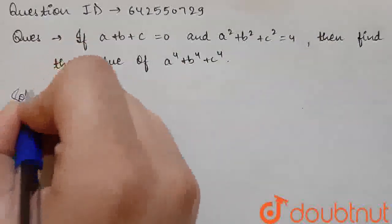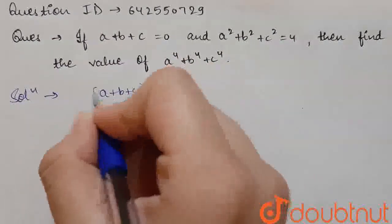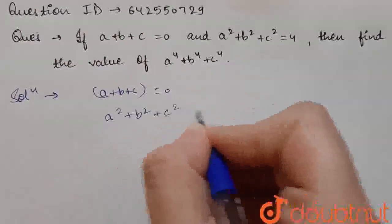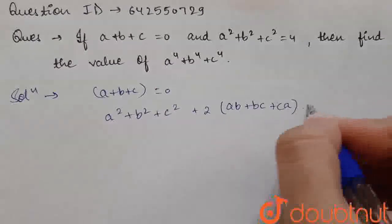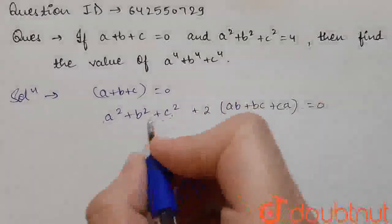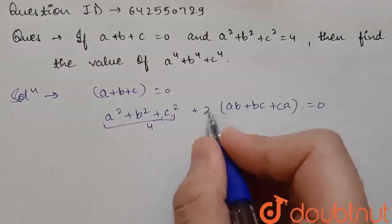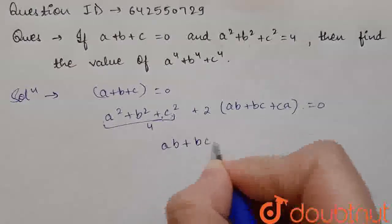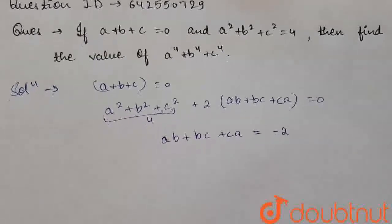For the solution, it is given to us that a plus b plus c equal to 0. So we will square this. This will be a square plus b square plus c square plus 2 times of ab plus bc plus ca, equal to 0. Now the value of a square plus b square plus c square is given as 4, so on solving this equation we will get the value of ab plus bc plus ca as minus 2.